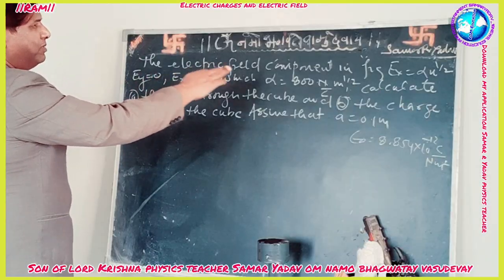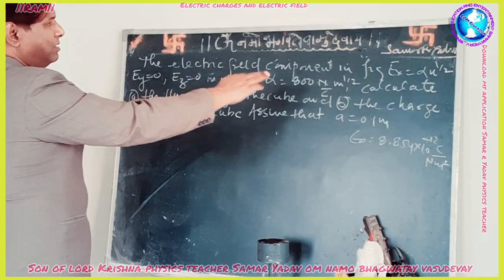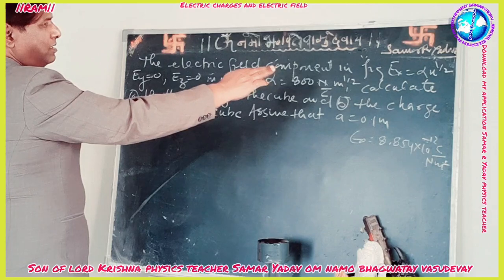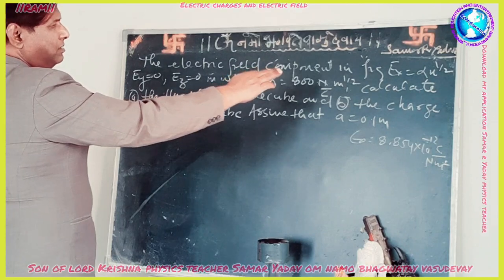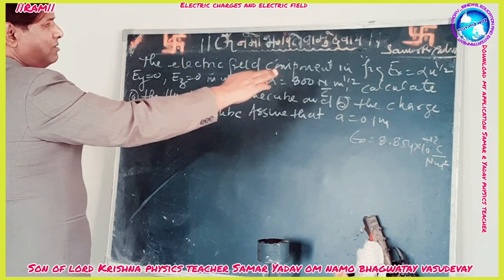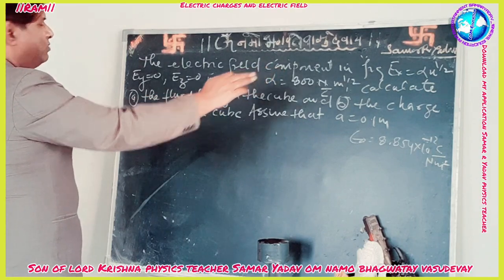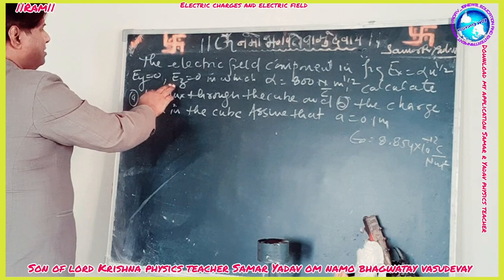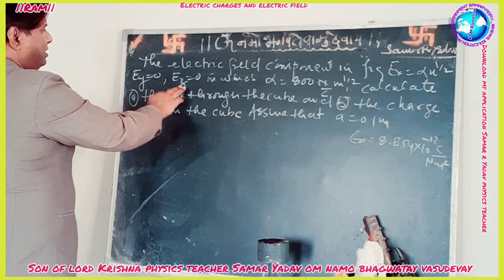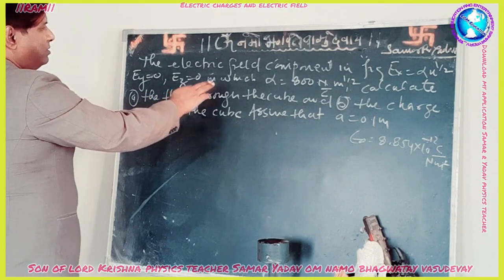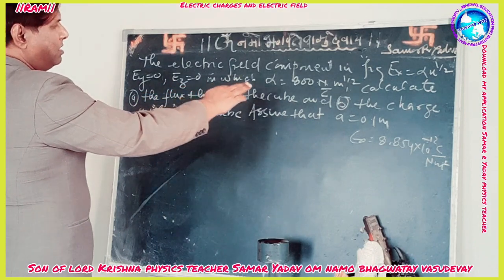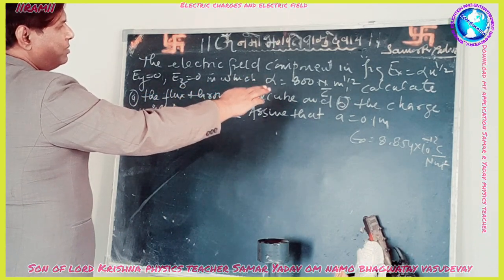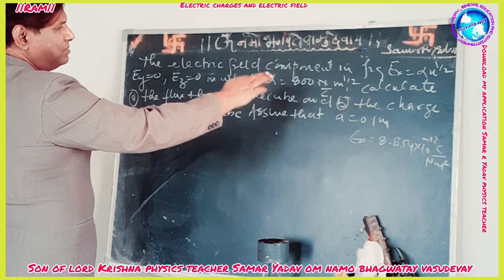The electric field components are: Ex is equal to alpha times x raised to 1/2, Ey is equal to 0, Ez is equal to 0, where alpha is equal to 800 N per C·m^(1/2).